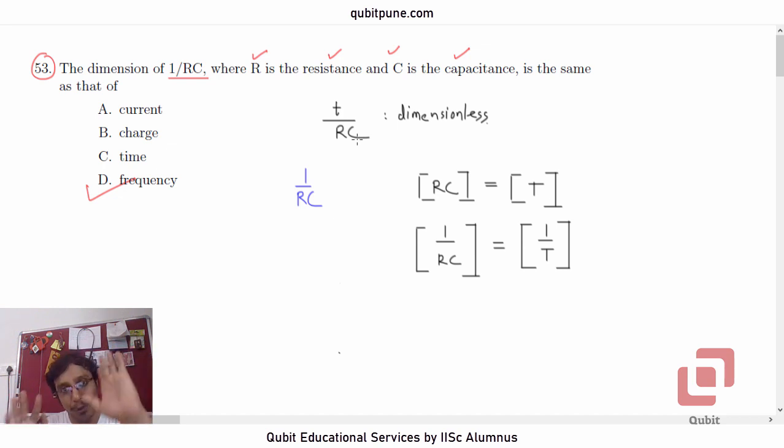In case if you don't know this, then how can you solve the problem? We know that C is equal to Q by V, correct? And we also know that V is equal to IR. Put this V here. So for dimensional analysis, we can say that C is equal to Q by IR.